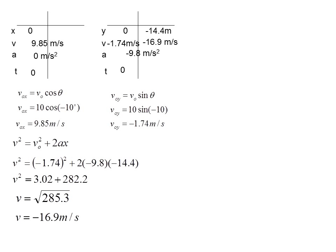Now, remember, when you take the square root, it's plus or minus. But we know that it's a downward velocity that we care about, so we want the negative 16.9 meters per second.